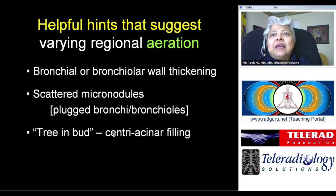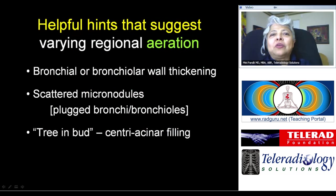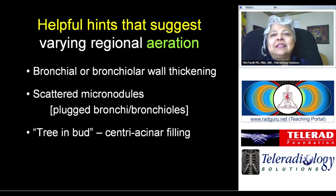Helpful hints that indicate aeration abnormality as the main cause include bronchial and bronchiolar wall thickening, scattered micronodules caused by plugging of bronchi and bronchioles, and tree-in-bud appearance where you have centrilobular alveolar filling giving hazy micronodular opacities. I will show you examples.